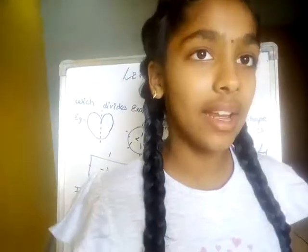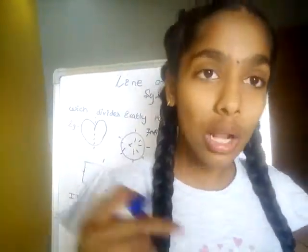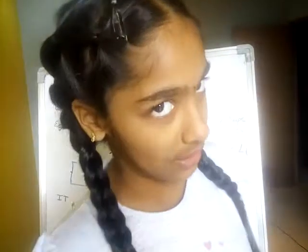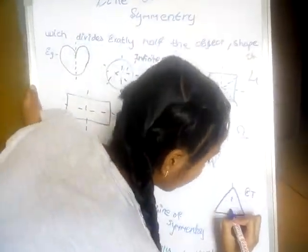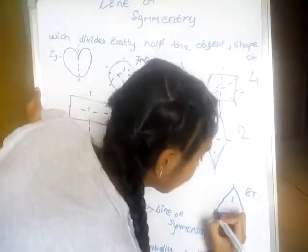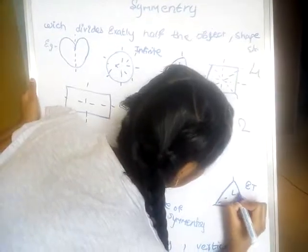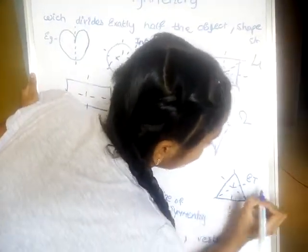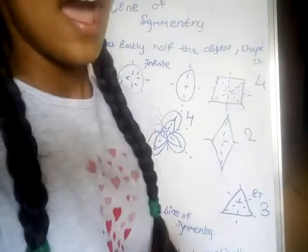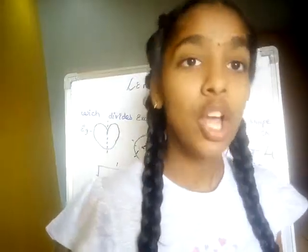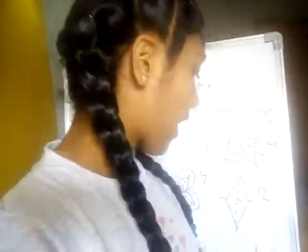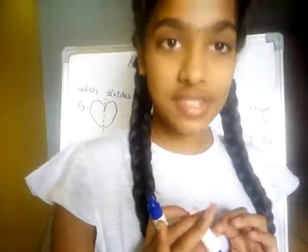I will show you the equilateral triangle. An equilateral triangle is one where all three sides are equal. So as all sides are equal, we have one, two, three lines of symmetry.